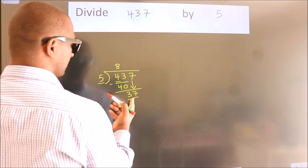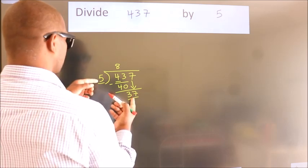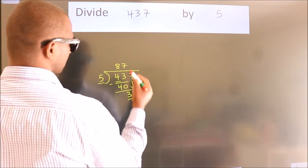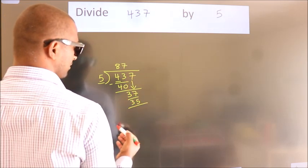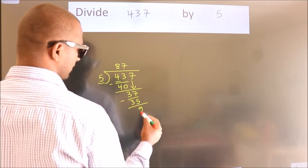A number close to 37 in 5 table is 5 sevens 35. Now we subtract. We get 2.